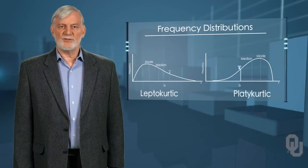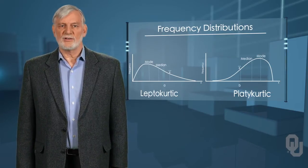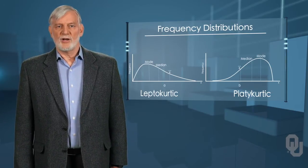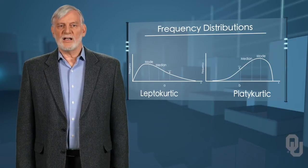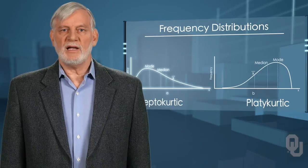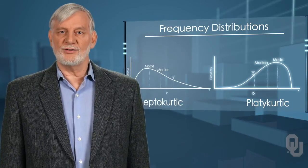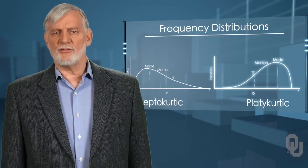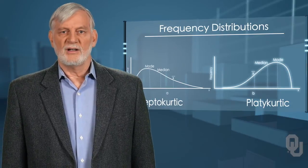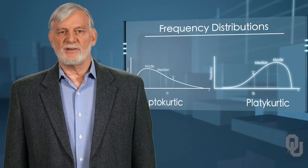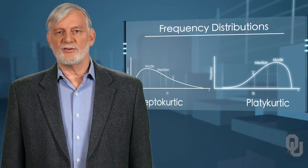Often, income distributions of countries are compared using these measures of skewness. Developing countries most often have dramatically skewed distributions looking like figure A. Figure B might be a distribution of grades in a statistics class of particularly good students, or the distribution of golf scores, where the frequency of good scores — that is, low scores — is skewed left, and the bulk of the distribution contains the scores of the ordinary players with high scores.